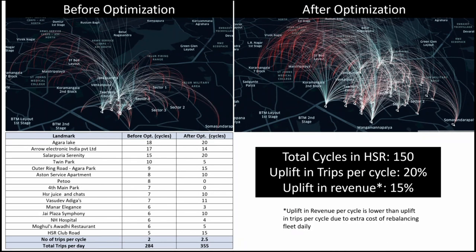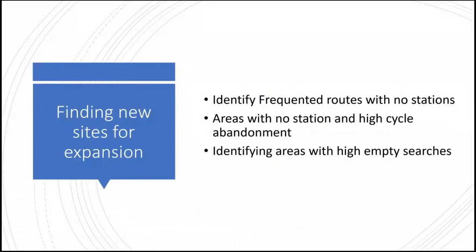Trips per cycle increased 20% but revenue only increased 15% because of a trade-off: operational cost also increases since we are now rebalancing every day instead of once a week. But at the net end of the day, there's a 15% revenue uplift. This is the power of this optimization.